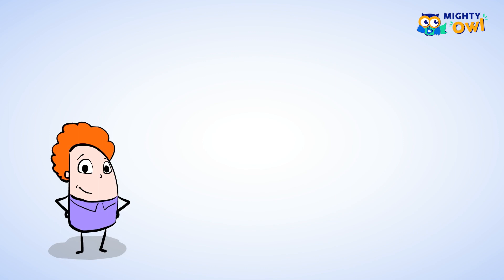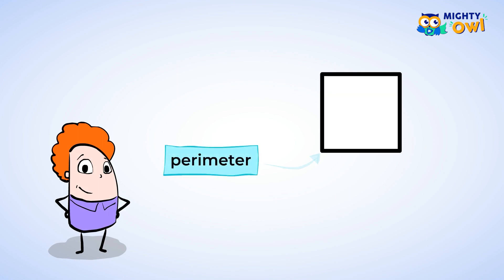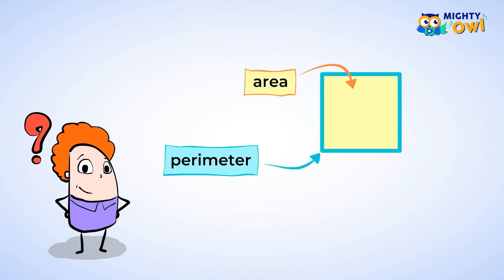So far, you've done some wonderful work with measuring. You know how to find the perimeter or the length around a shape. You also know how to find the area of shapes, or the amount of space in the shape. Well, here's an interesting question: do you think shapes that have the same perimeter would also have the same area? Let's explore this thought.